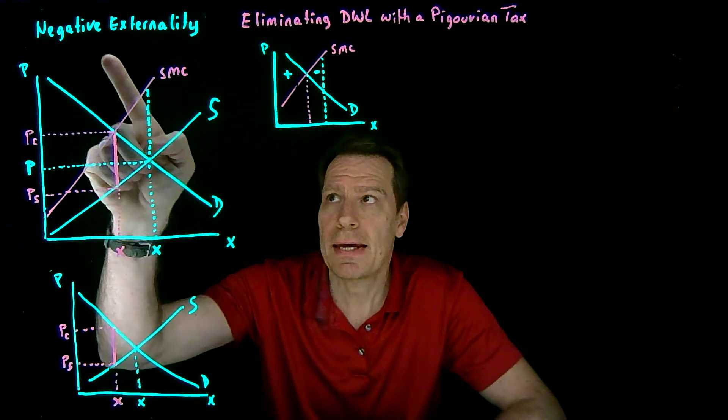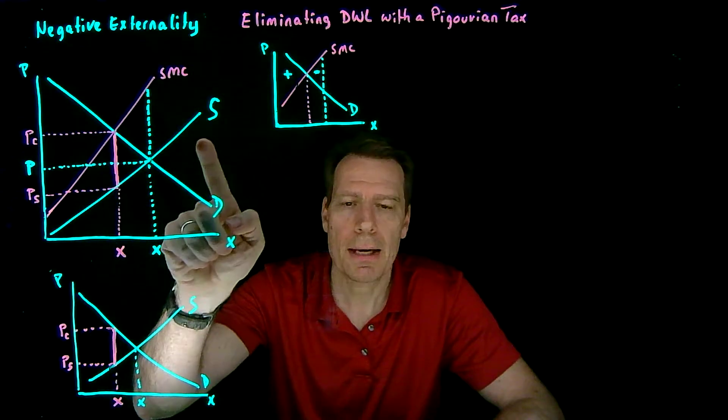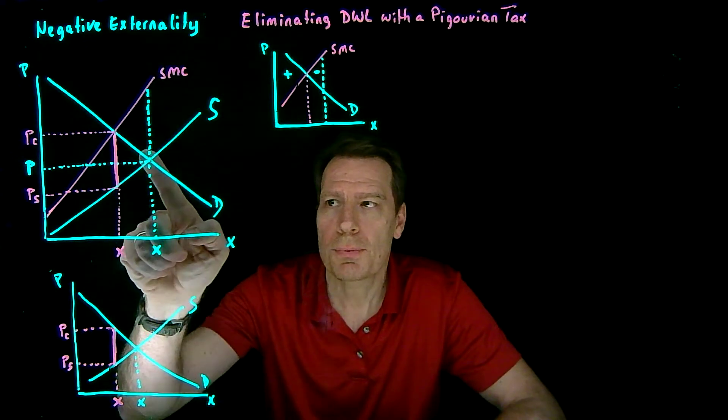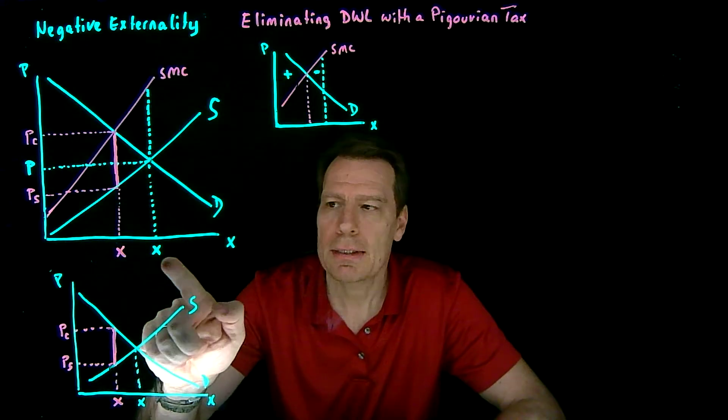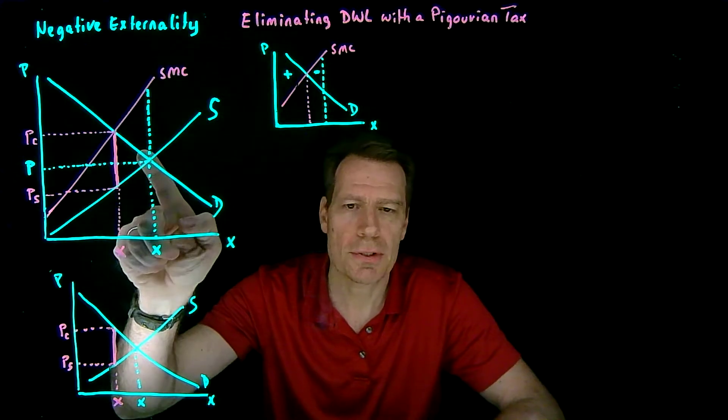We've seen that when we have a negative externality, the social marginal cost lies above the supply curve. So the market quantity, which occurs where demand and supply intersect, is larger than the socially optimal quantity, which occurs where social marginal cost crosses demand.